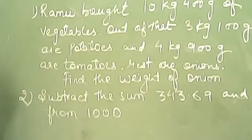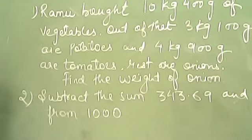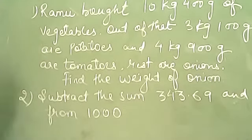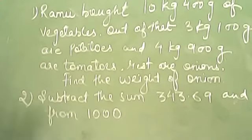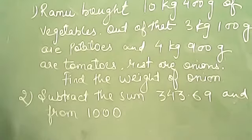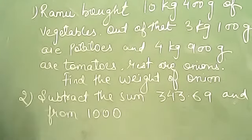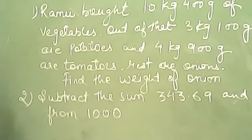Out of that, 3 kg 100 grams were potatoes, 4 kg 900 grams are tomatoes, and rest were onions. So it means we had total 3 types of vegetables.